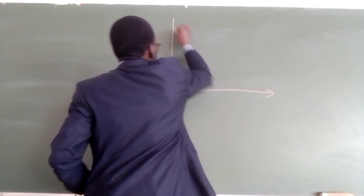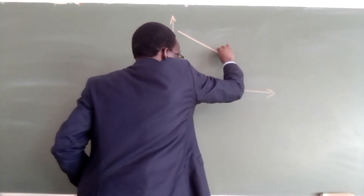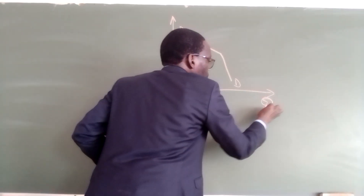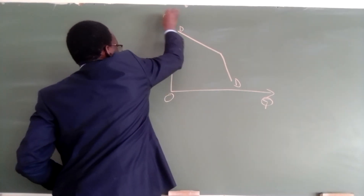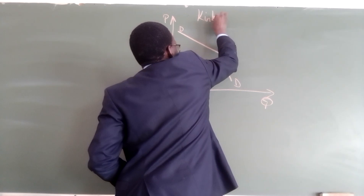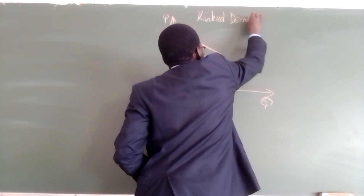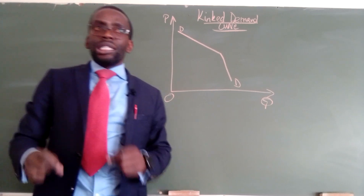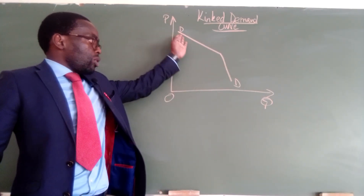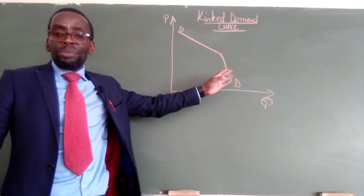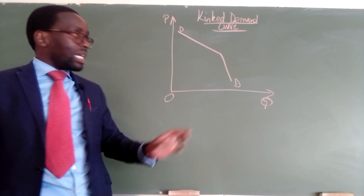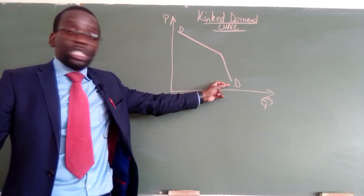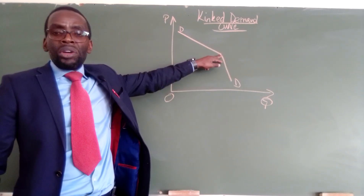A kinked demand curve is something that looks like this. We have our demand curve on the graph with price on the vertical axis and quantity on the horizontal axis. It is a demand curve made up of two separate demand curves — the first part at the top, and the second demand curve at the bottom — and these two are joined at a point called the kink.